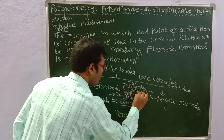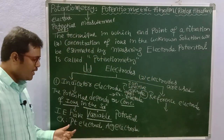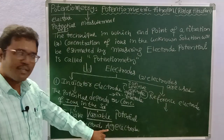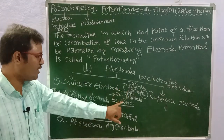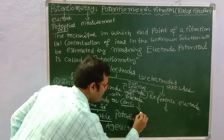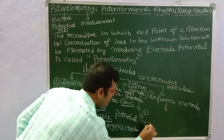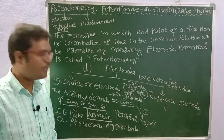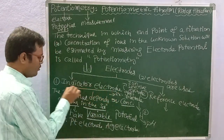So, examples of indicator electrodes include the platinum electrode, silver electrode, and ion-selective electrodes such as the glass electrode. The glass electrode is used to measure H⁺ ion concentration in a solution.